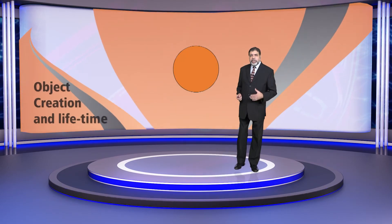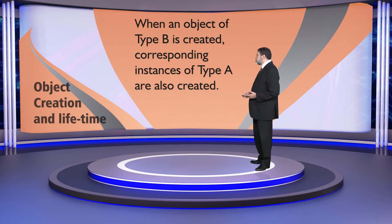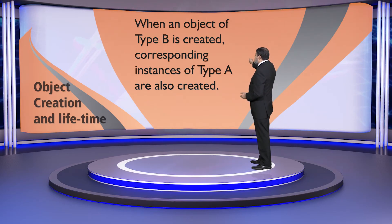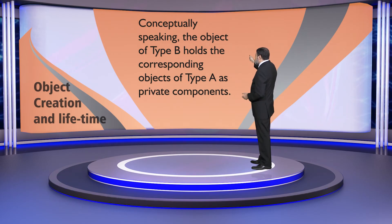In the case of composition, regarding object creation and lifetime, we consider classes A and B where A is part of B — certain instances of A are part of B. So when an object of type B is created, some instances of A are also created. Conceptually, the object of type B holds the corresponding objects of type A as private components.